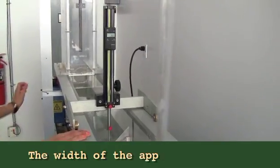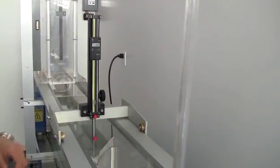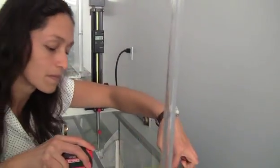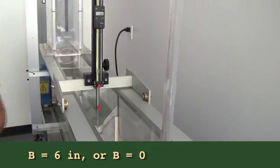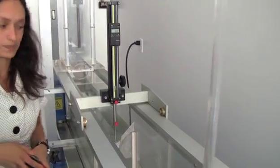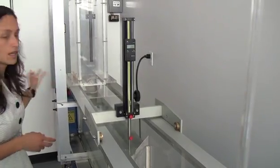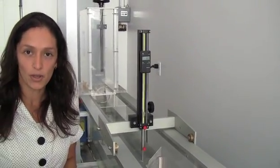The width of the channel is six inches or 0.5 feet. Now we are going to measure the hydraulic head H over the weir.